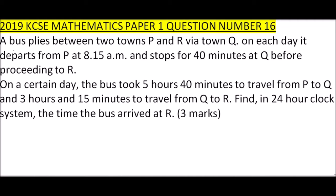On a certain day, the bus took 5 hours 40 minutes to travel from P to Q and 3 hours 15 minutes to travel from Q to R. Find, in 24-hour clock system, the time the bus arrived at R.